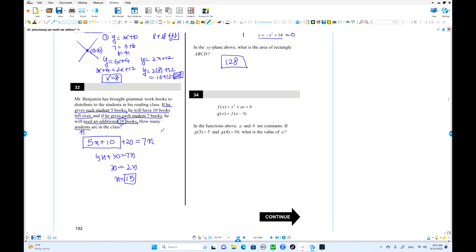Problem 34: g(3) equals 5 and g(4) equals 10. Find the value of a. g(3) means f(0) equals 5, so b equals 5. g(4) means f(1): when x is 1, we get 1 plus a plus b equals 10. Since b is 5, then a + 6 equals 10, so a equals 4.